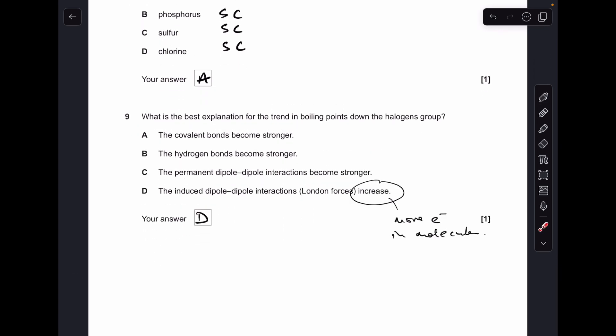Number 9, so D was the correct statement. The induced dipole-dipole interactions or London forces are increasing as you go down the group because you've got more electrons in the molecule.